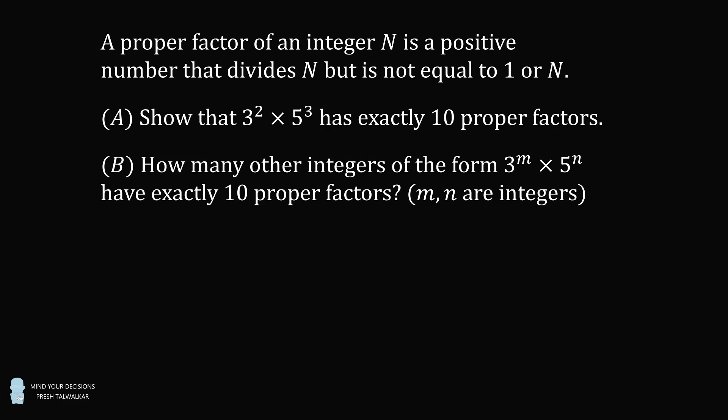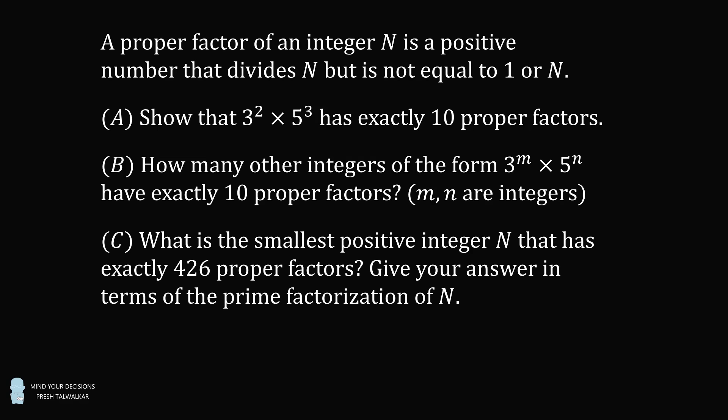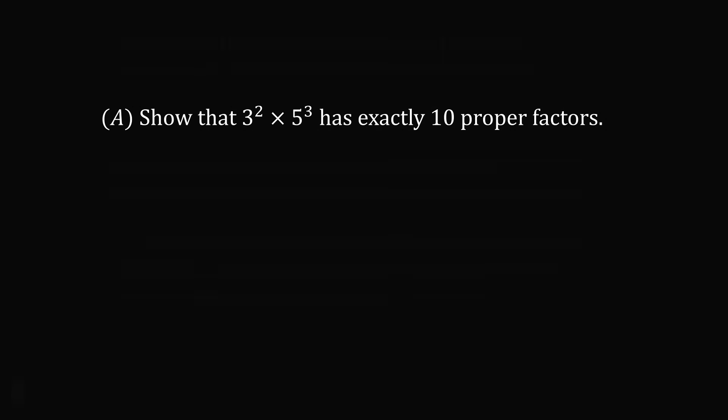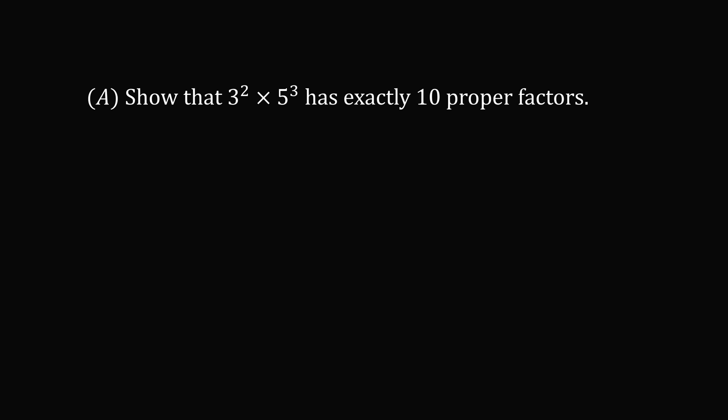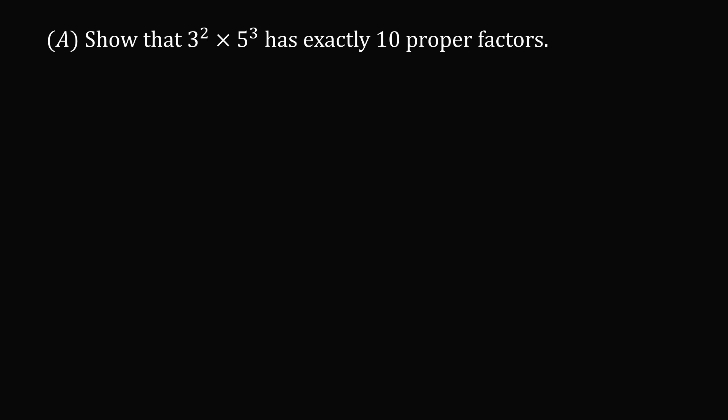m and n are integers. Part C: What is the smallest positive integer n that has exactly 426 proper factors? Give your answer in terms of the prime factorization of n. Let's start out with Part A: Show that 3 squared times 5 cubed has exactly 10 proper factors.